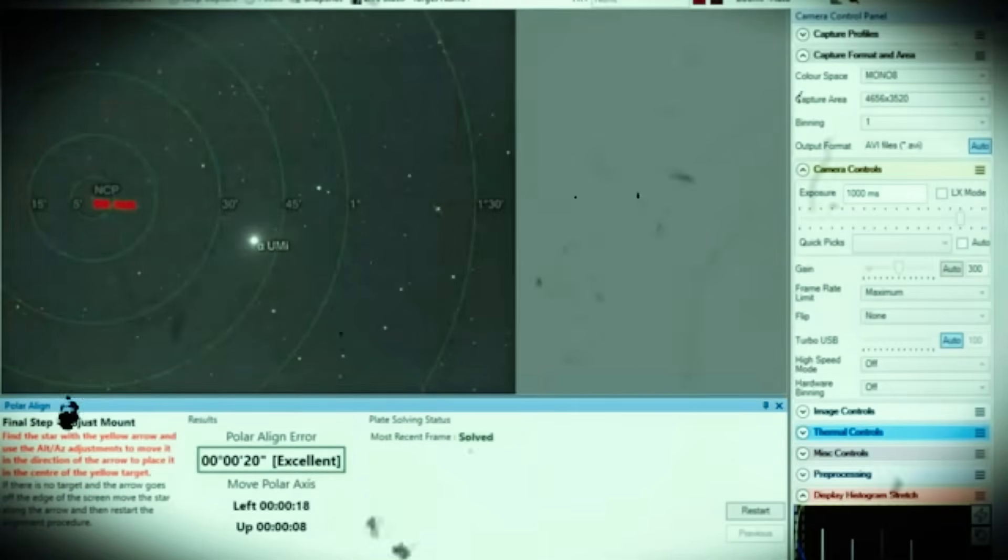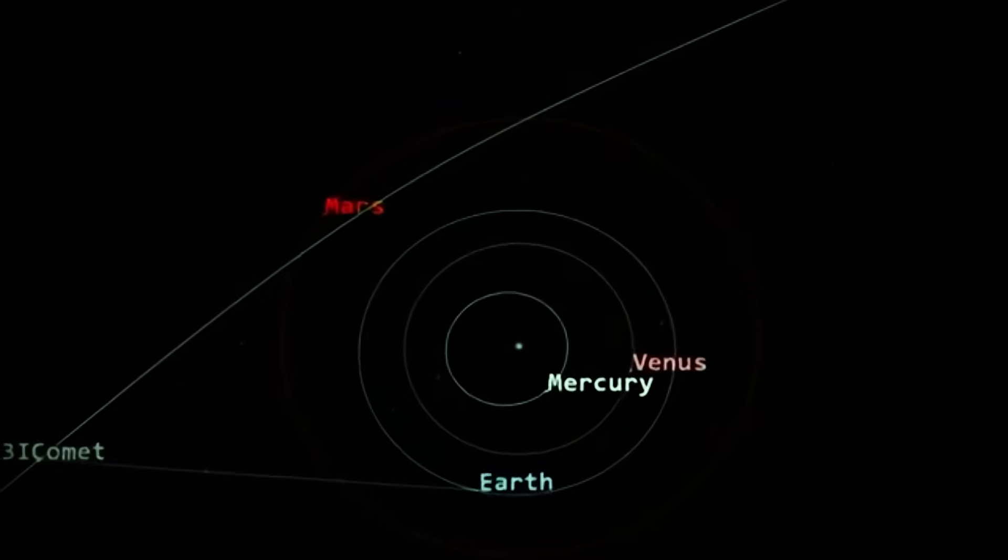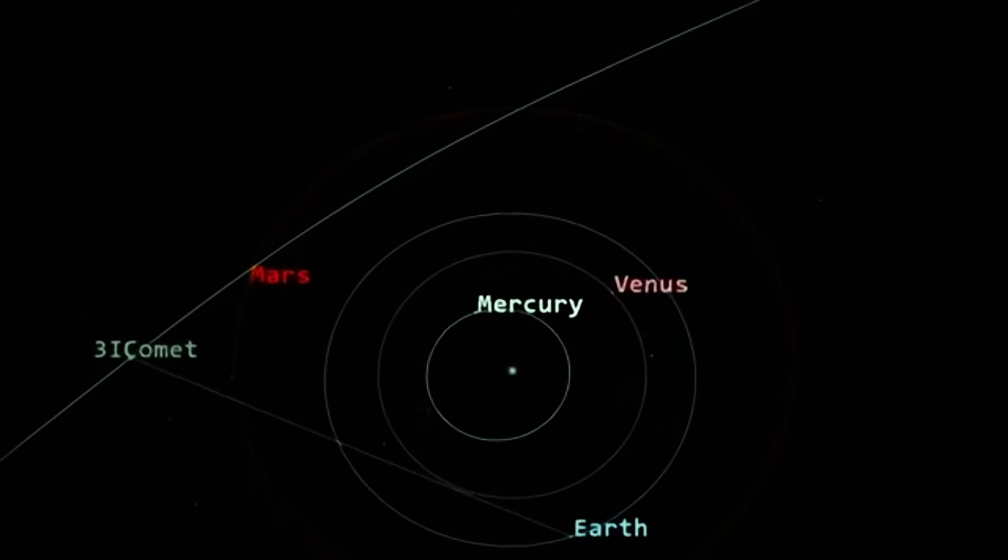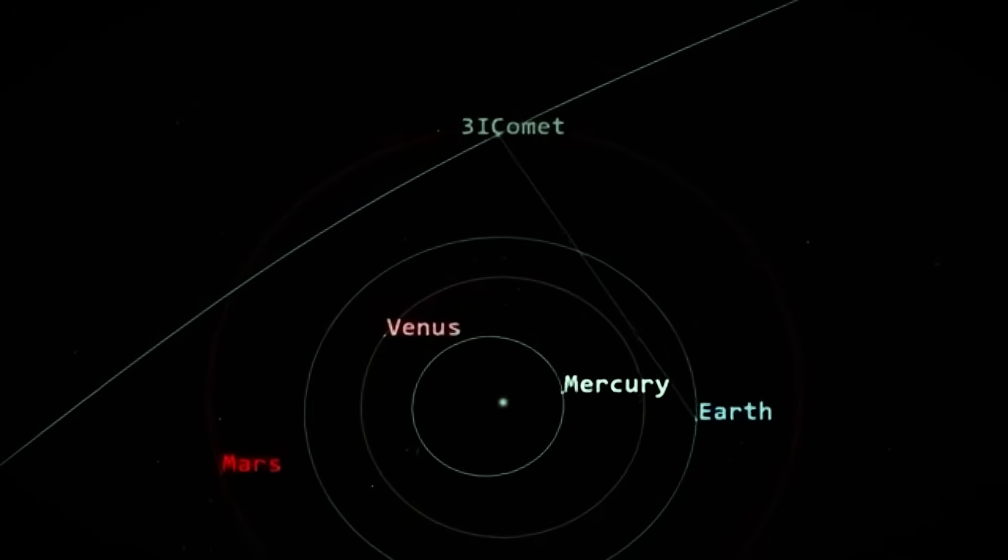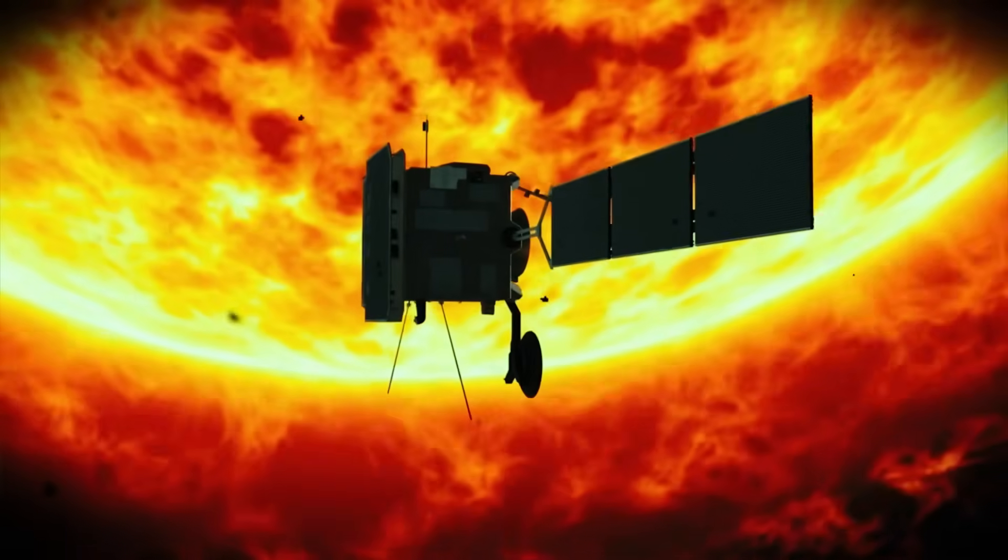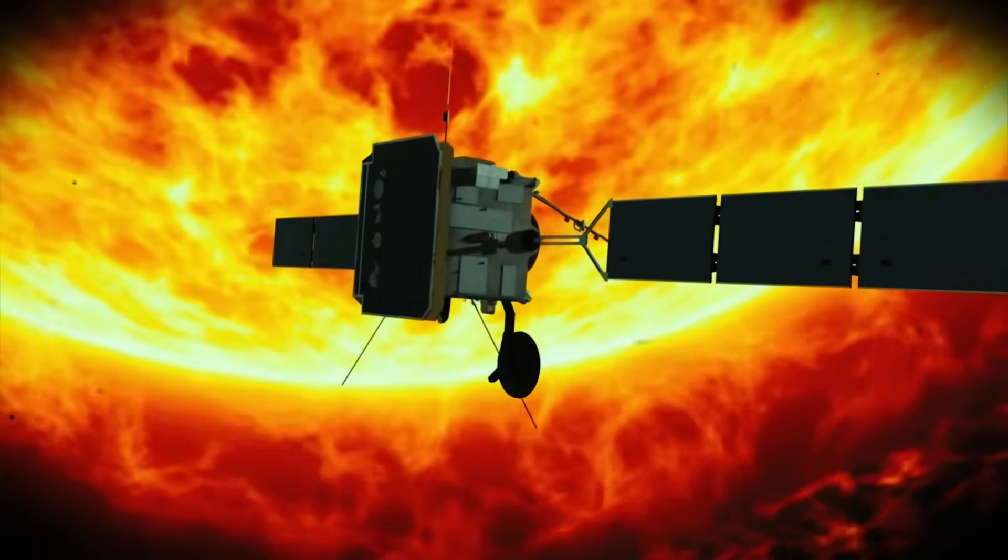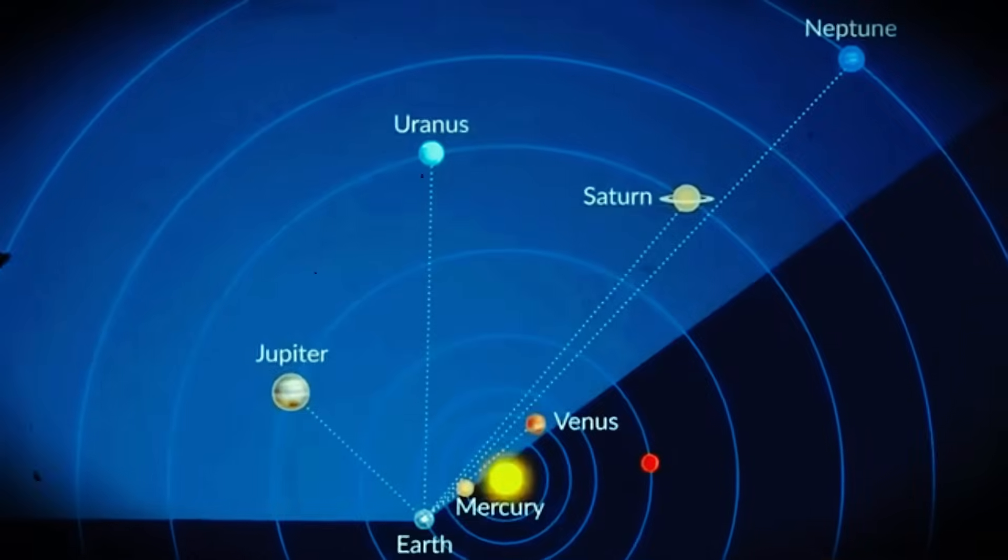7. Origin direction. Near the WOW signal. 1,977. Trajectory projections indicate approximate origin from the same celestial region as the famous WOW radio signal detected in 1977. The directional coincidence reignited debates about specific cosmic routes.